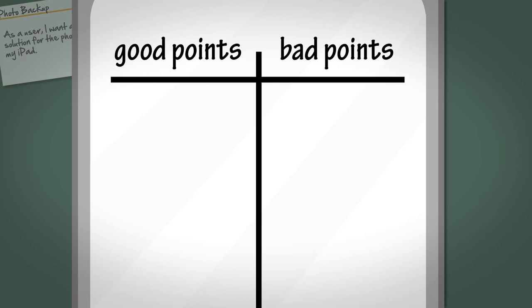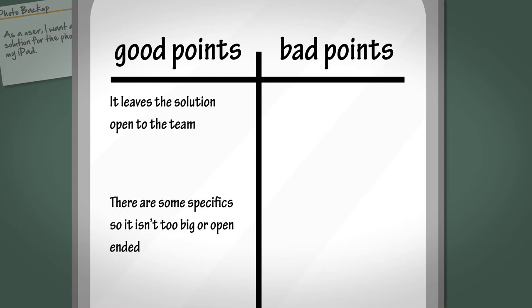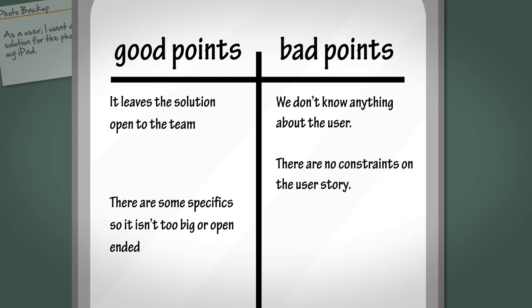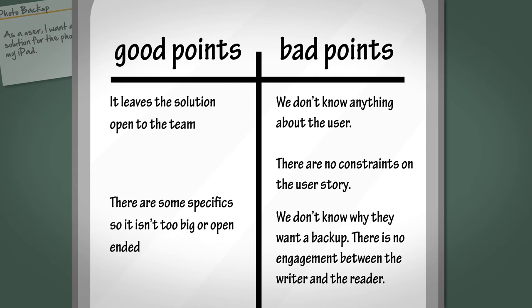Examples of things they might say are: It leaves the solution open to the team. There are some specifics, so it isn't too big or open-ended. For example, it states iPad, which means we don't have to design for all other tablets or devices. And it states photos, so we don't have to consider backing up other items. But we don't know anything about the user, and there are no constraints. We don't know why they want to back up, and there's no engagement between the writer and the reader.